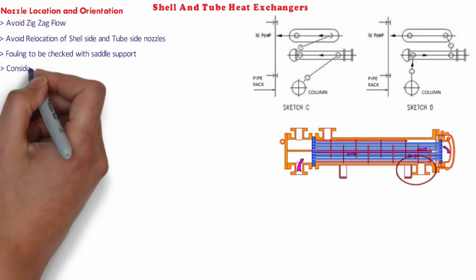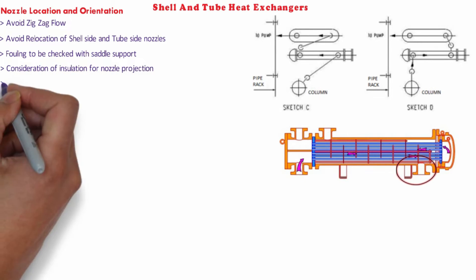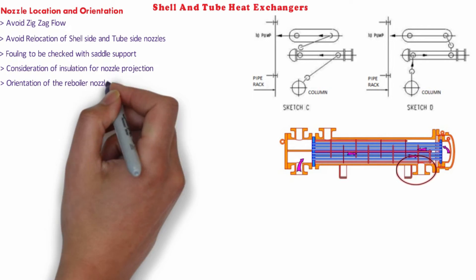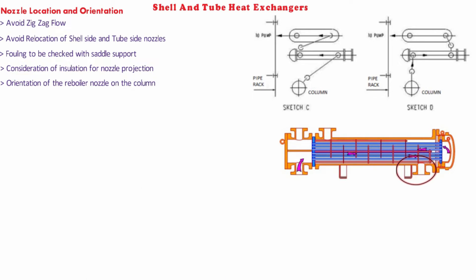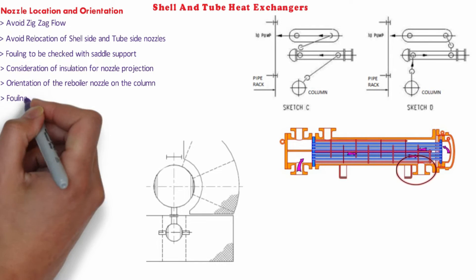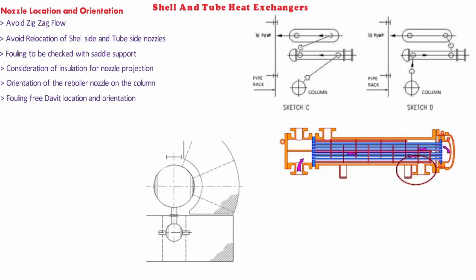Insulation on piping and exchangers should be taken into account while deciding the projection of nozzles. Orientation of the reboiler nozzle on the column should be planned to have sufficient flexibility with minimum bends in the line connected between reboiler and column. In case a davit is provided at the end of the exchanger for opening of the cover, the location and orientation should be provided to mechanical to avoid fouling with any nearby facilities while opening the cover. The opening volume required for the end cover should be blocked in the model to avoid any interference.